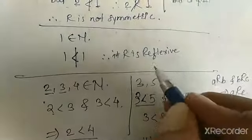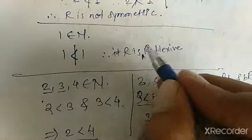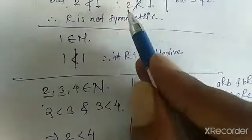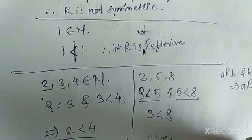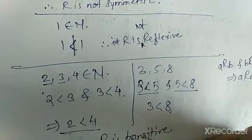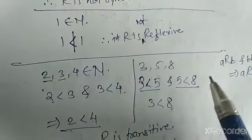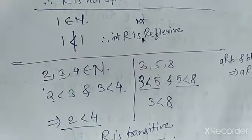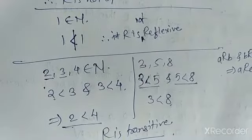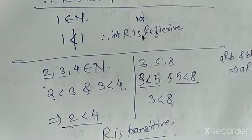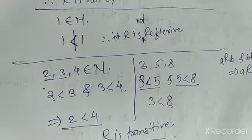So, for the relation A < B on N: R is not reflexive, not symmetric, but it is a transitive relation. By using definitions, you have to check whether a relation is reflexive, symmetric, transitive, or anti-symmetric. Now consider the next example: let A be the set of lines in a plane.